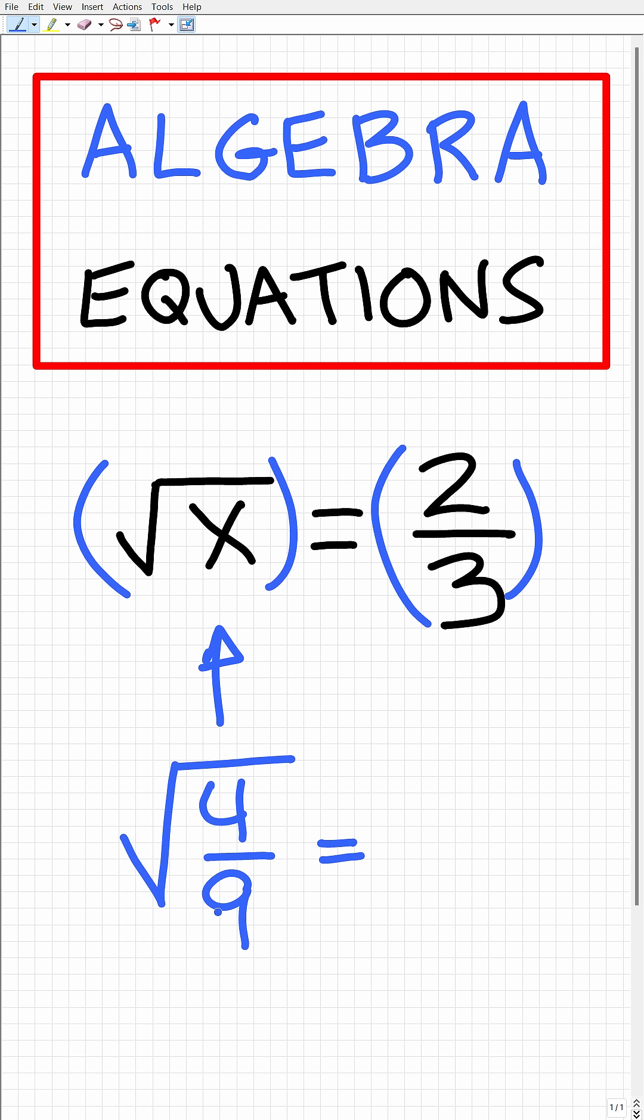To take the square root of a fraction in mathematics, what you can do is actually take the square root of both the individual numerator and denominator. So the square root of four over nine is equal to the square root of four over the square root of nine.